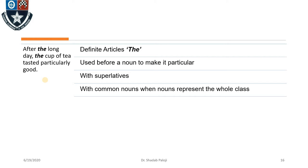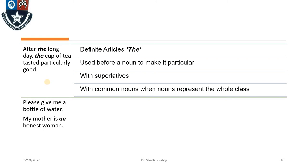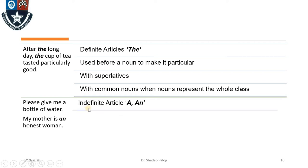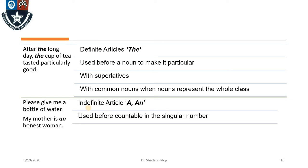Now look at these two statements: 'Please give me a bottle of water' and 'My mother is an honest woman.' Here in the first we are talking of something in a group and that one thing is special, whereas in the second it is singular, about only one. This could be called an indefinite article — 'a' and 'an' — meaning you are not pointing out at someone special among all, but indefinitely that one.